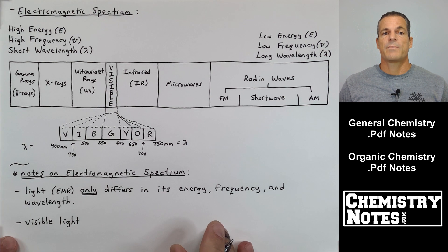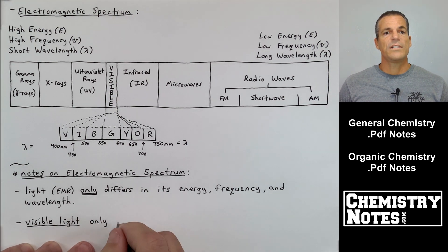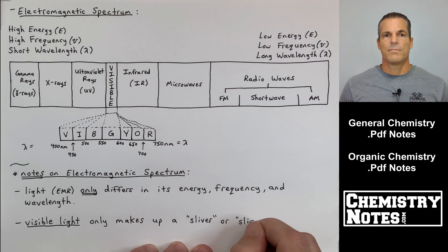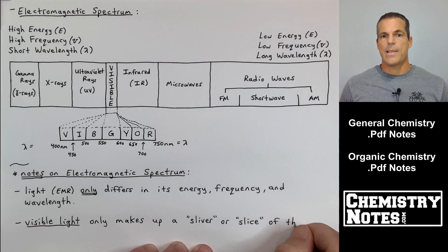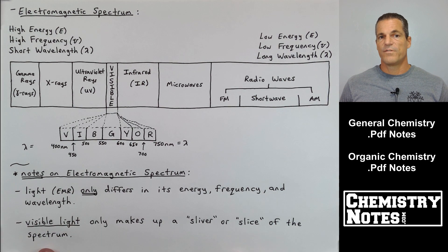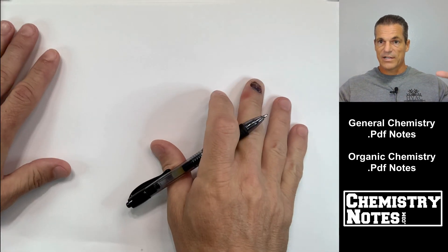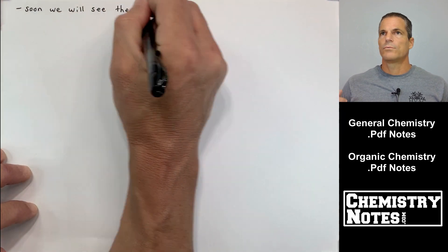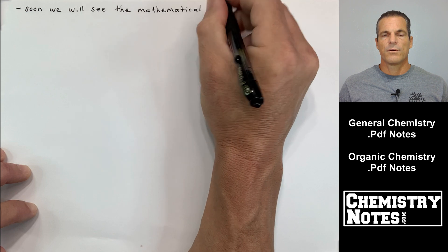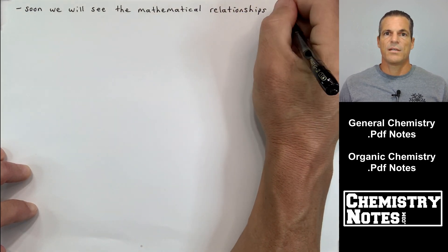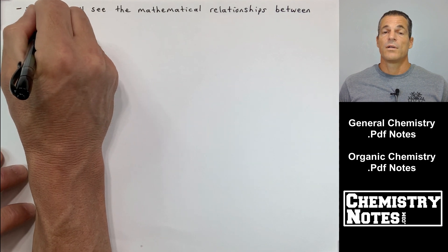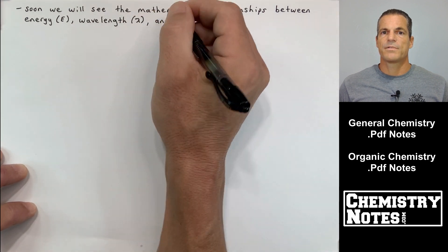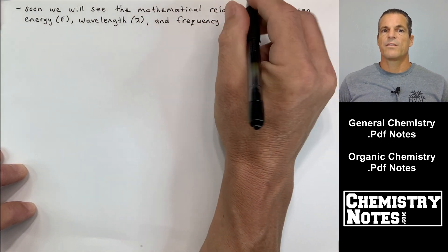A few notes on the electromagnetic spectrum. Light EMR only differs in its energy, frequency, and wavelength. Visible light is only different from microwaves in its energy, frequency, and wavelength. Visible light only makes up a tiny sliver of the electromagnetic spectrum. Gamma rays, radio waves, orange lights are only different in their energy, frequency, and wavelength. Soon we will see the mathematical relationships between energy, wavelength and frequency.